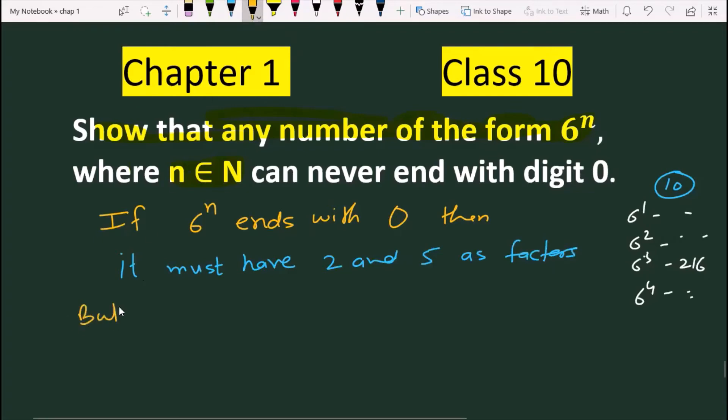But when we factor 6 to the power n, we see 6^n = (2 × 3)^n = 2^n × 3^n. This is showing us that the factors are only 2 and 3.